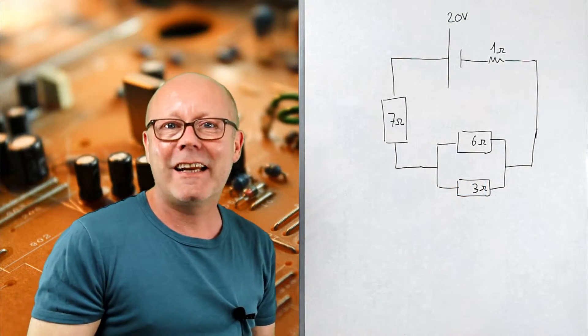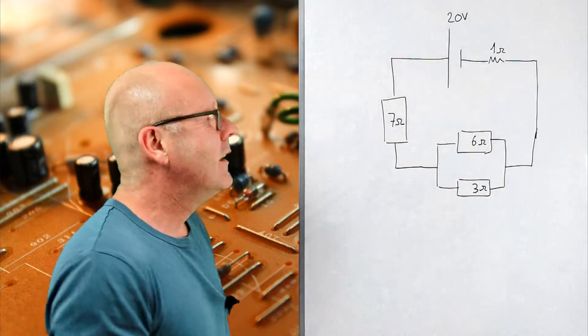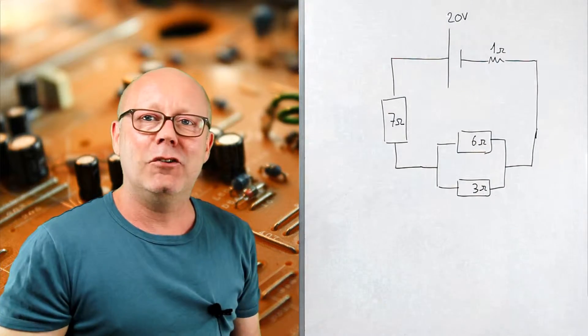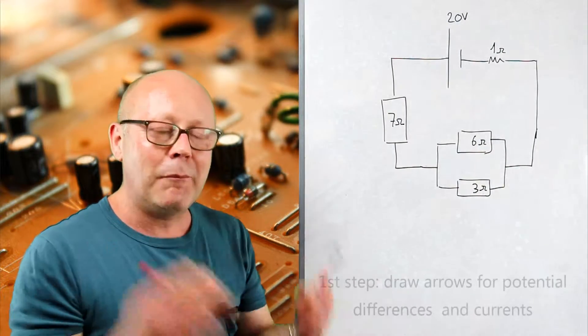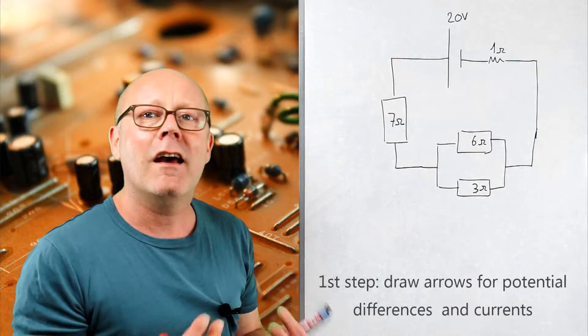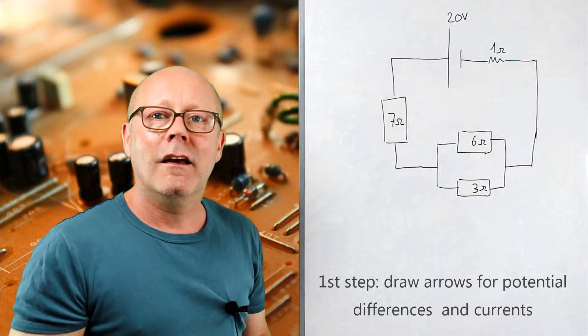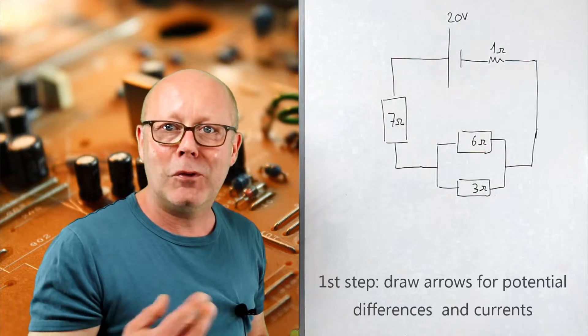Welcome back. How did it go? The first step is actually to look at the circuit, not to jump into the calculations first. Let's have a quick look, and to do that we use the fact that we are going to draw the arrows for the potential drops and the currents.